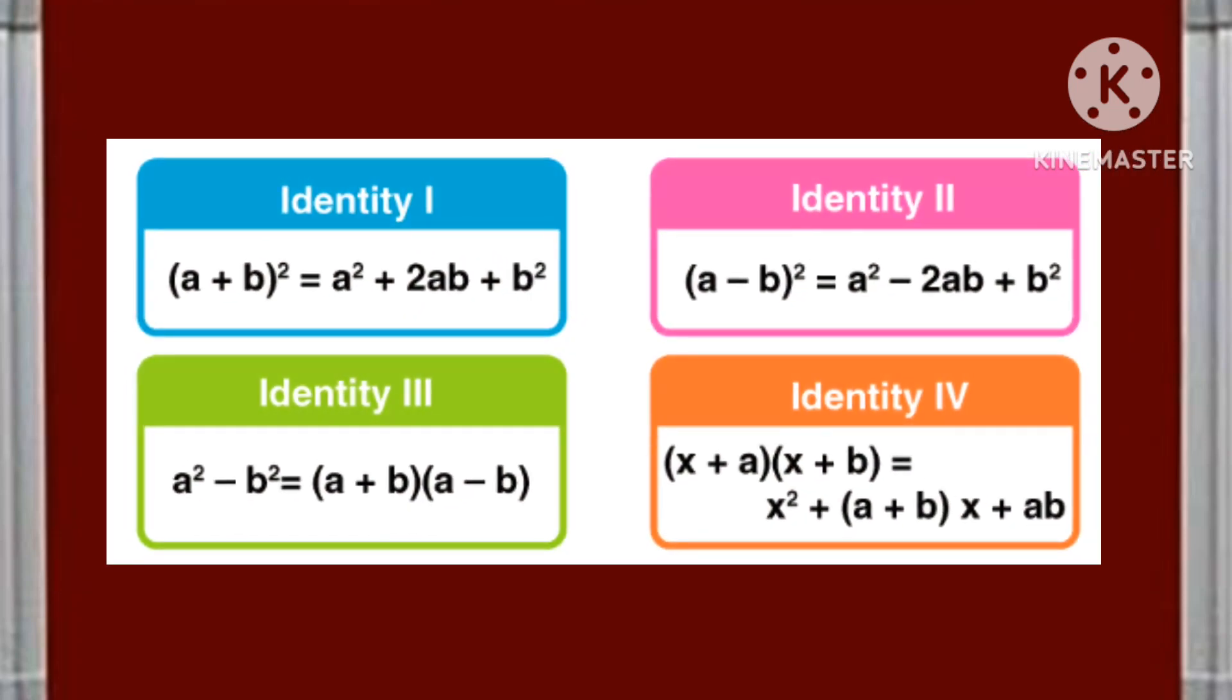Identity 1: (a + b)² = a² + 2ab + b². Identity 2: (a - b)² = a² - 2ab + b². Identity 3: a² - b² = (a + b)(a - b). Identity 4: (x + a)(x + b) = x² + (a + b)x + ab.